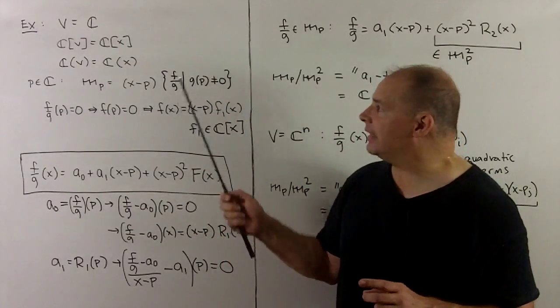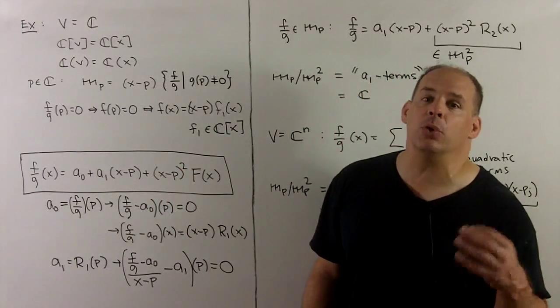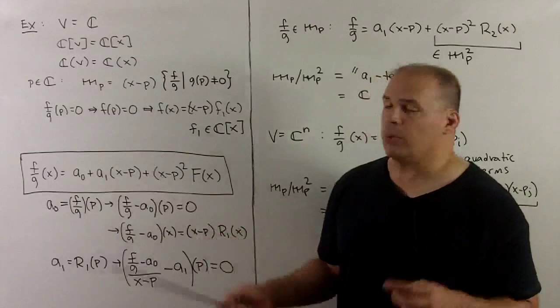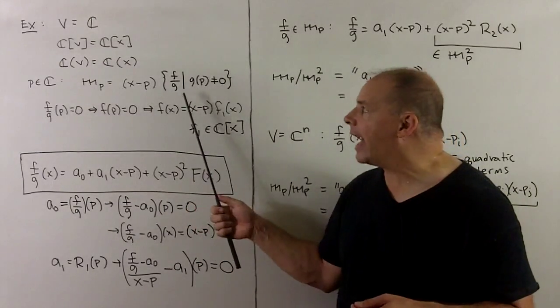If we have an element in the local ring evaluating to zero, that only happens if the numerator evaluates to zero, which means we have a factor of (X - P) in the numerator. And so we can pull that out.